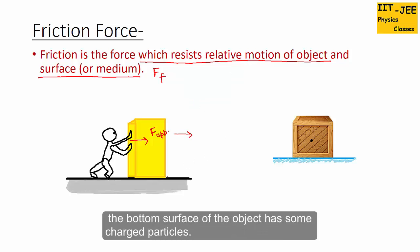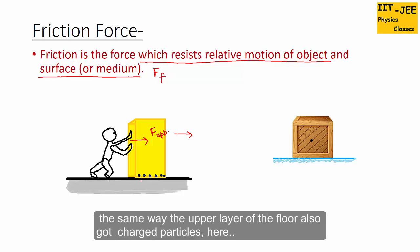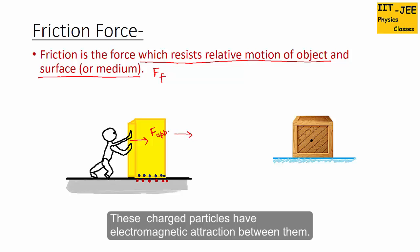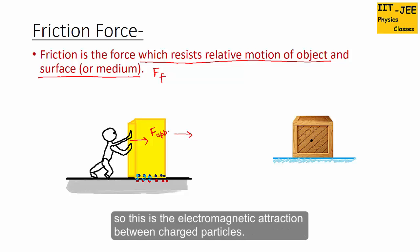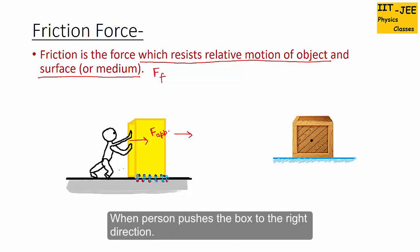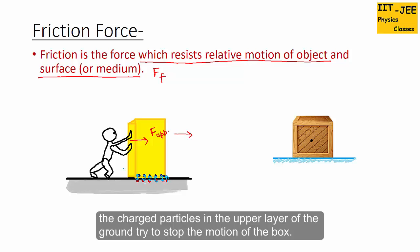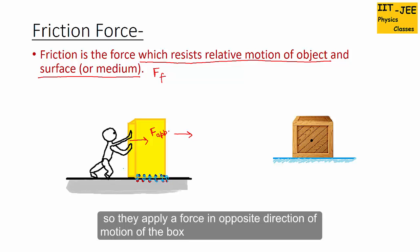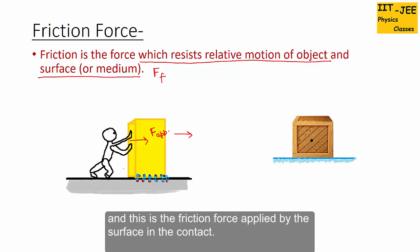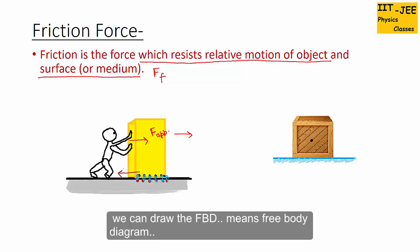Let me show you why the surface applies a friction force on the box. The bottom surface of the object has some charged particles, and the upper layer of the floor also has charged particles. These charged particles have electromagnetic attraction between them. When you push the box to the right, the charged particles in the upper layer of the ground try to stop the motion of the box, applying a force in the opposite direction. This force is the friction force applied by the surface in contact.